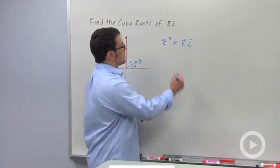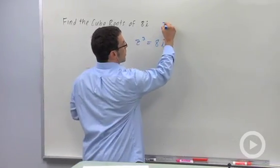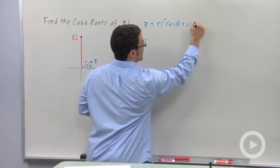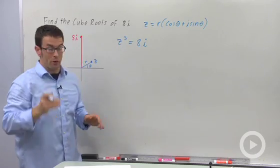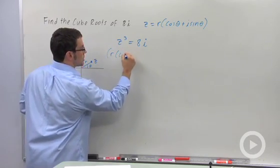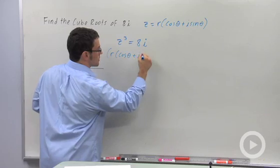Let's assume that the cube roots, z, are of the form r cosine theta plus i sine theta. That is, let's assume they're all in trig form. If they are, then I could just cube them using DeMoivre's theorem.